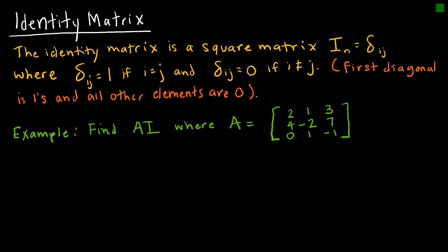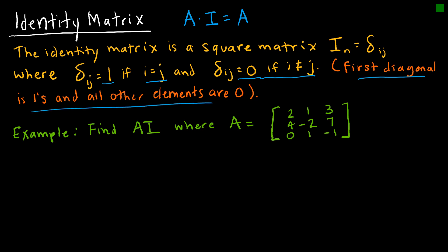I have two more concepts to cover. The first is the identity matrix. If I take a matrix and multiply it by the identity, I should end up back at the matrix I started with. The identity matrix is a square matrix where, if the row and column address are the same, the value is 1; otherwise the value is 0. Basically, the main diagonal is all 1s and everything else is 0.